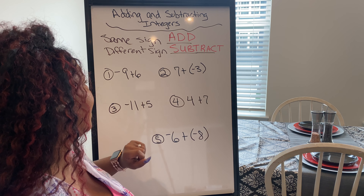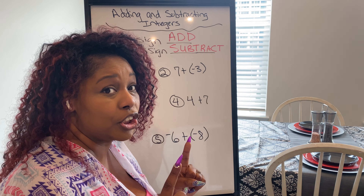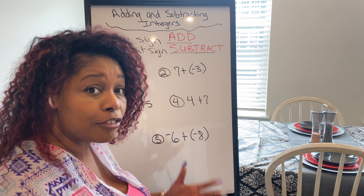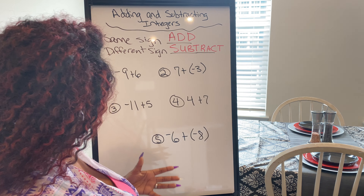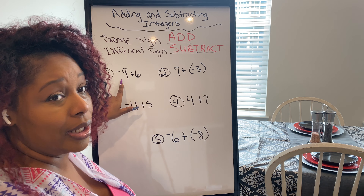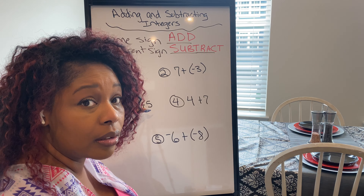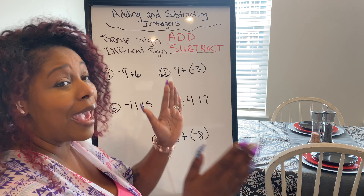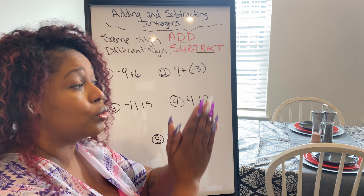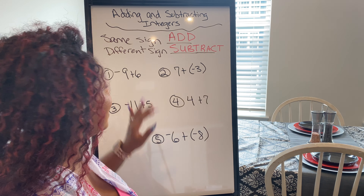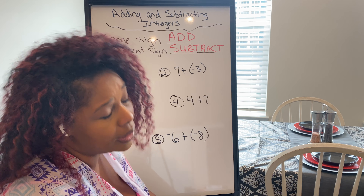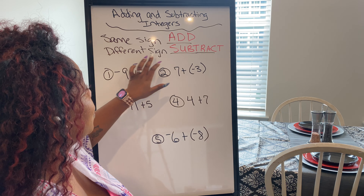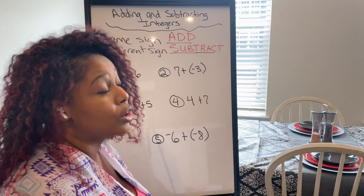If I have negative 9 plus 6, the first thing I need to ask is: do I have the same sign or a different sign? This has a negative on it — does this one? No. So because the signs are different, I cannot add them; I need to subtract them. Even though I see a plus sign, the rule says different signs means I subtract.